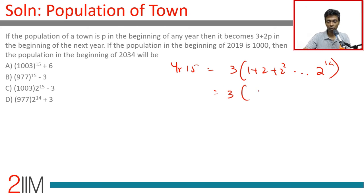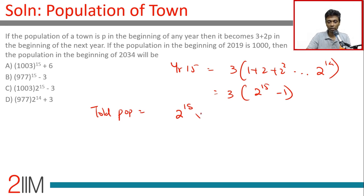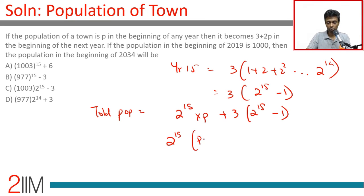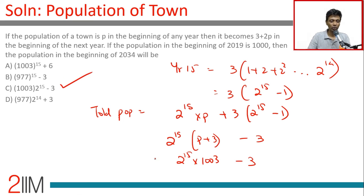This GP sum gives 3·(2¹⁵ − 1)/(2 − 1) = 3·(2¹⁵ − 1). So the total population is 2¹⁵·p + 3·(2¹⁵ − 1) = 2¹⁵·(p + 3) − 3. With p = 1000, the answer is 2¹⁵·1003 − 3.